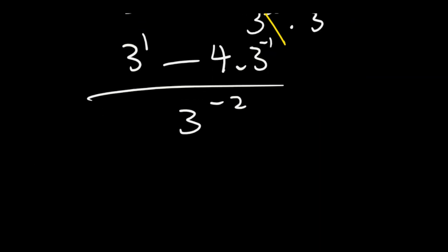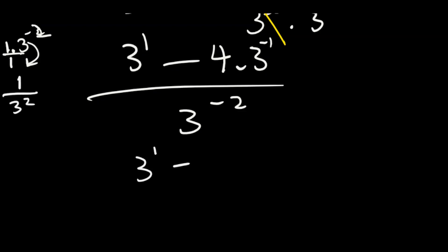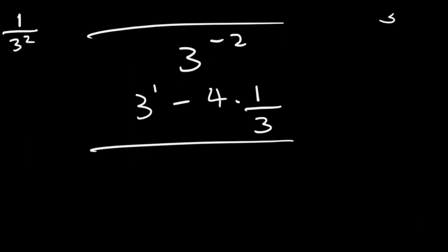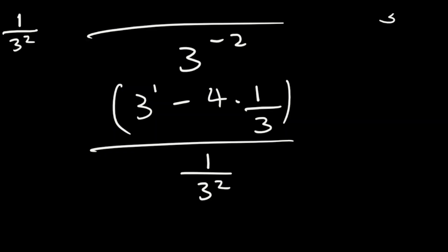Now we change the negative exponents. For 3 to the power of minus 2, there's a 1 on top — you take it to the bottom, leaving 1 over 3 to the power of 2. Similarly, 3 to the power of minus 1 becomes 1 over 3. So we have 3 to the power of 1 minus 4, multiplied by 1 over 3, divided by 1 over 3 to the power of 2.